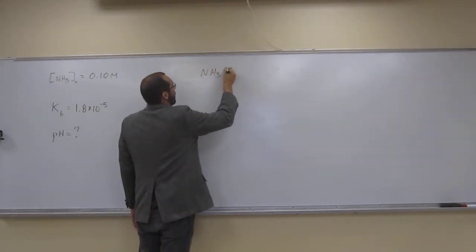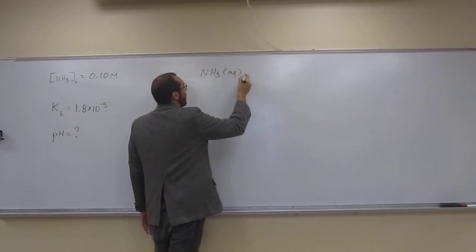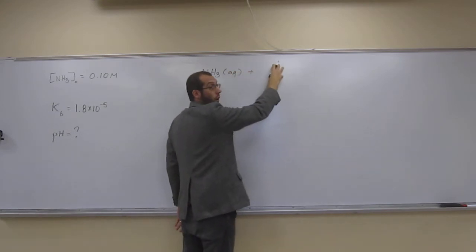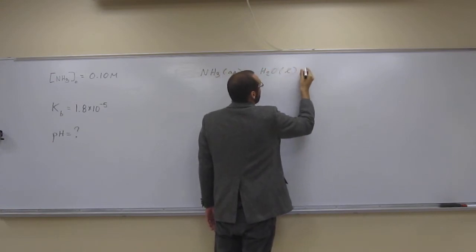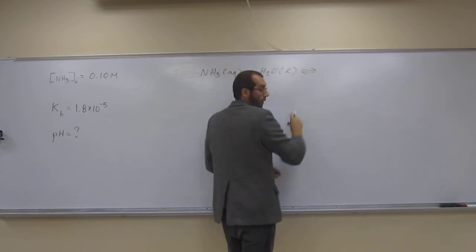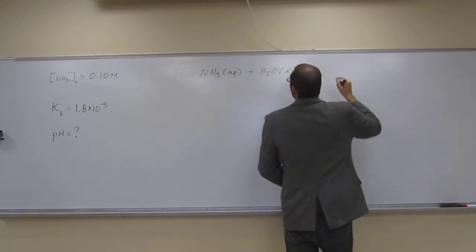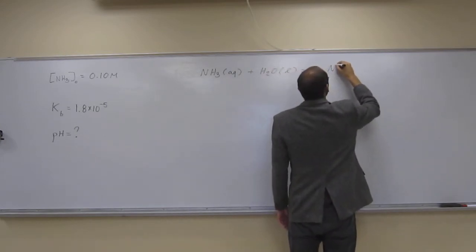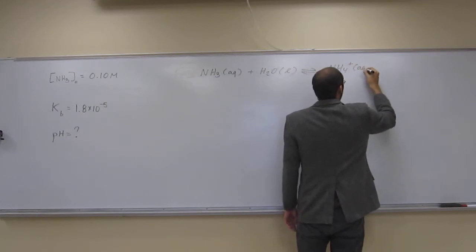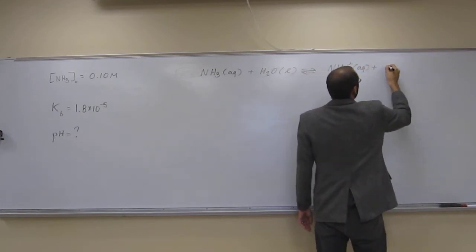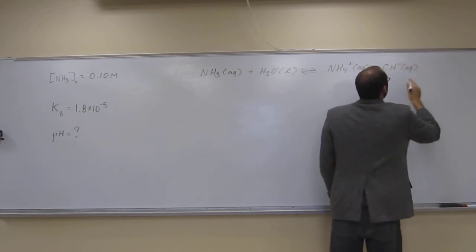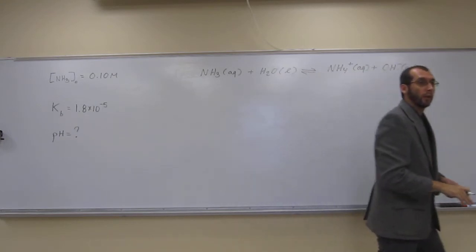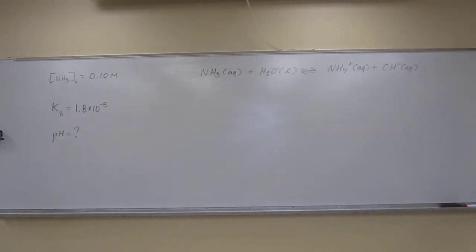So let's write down the chemical equation. It's going to be NH3 aqueous plus water liquid goes back and forth to the ammonium ion plus OH minus aqueous. And that's where we're going to look for our pH with.